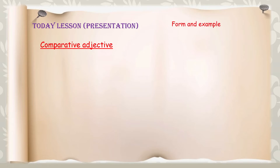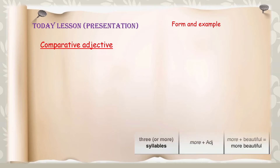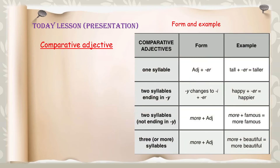Now please take a look at the forms and some examples of comparative adjectives. We have four categories: one syllable, two syllables ending in -y, two syllables not ending in -y, and three or more syllables. For one-syllable adjectives, we add -er to the adjective. For example, 'tall' is one syllable, so tall plus -er becomes 'taller'.